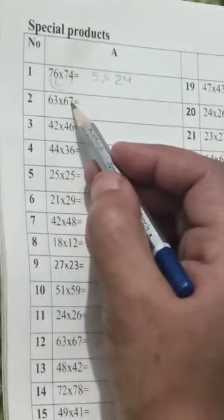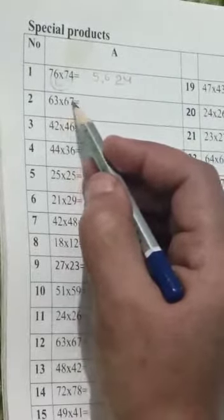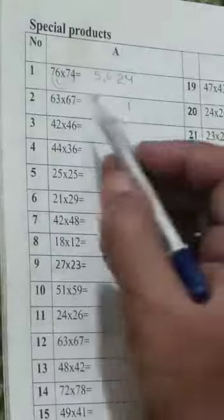One more question. Question same. One's digit number, 7 and 3. 7 3s are 21. 1, 2 carry forward.